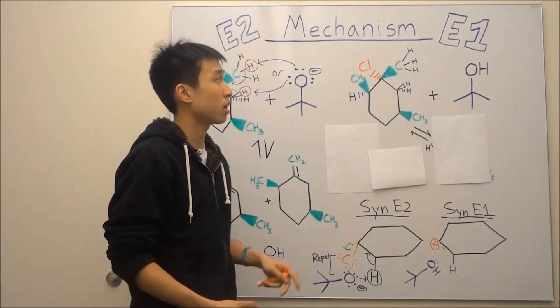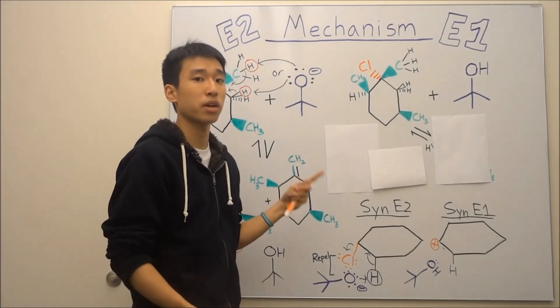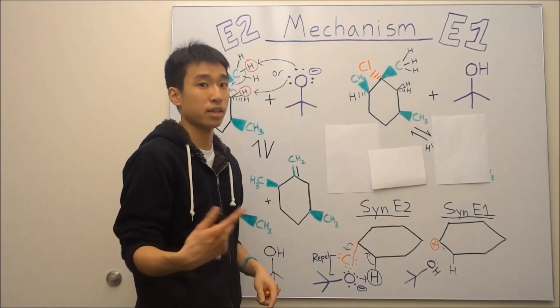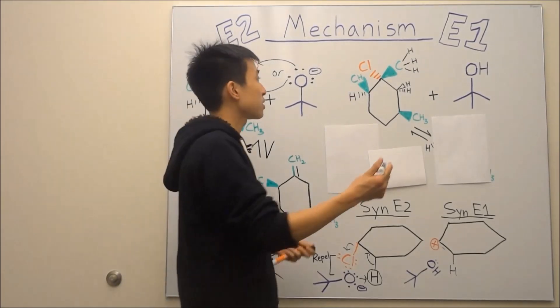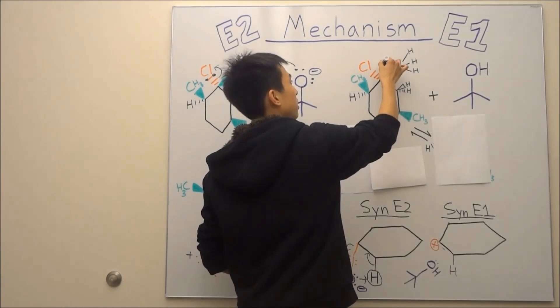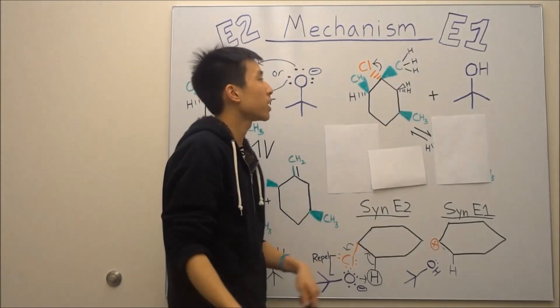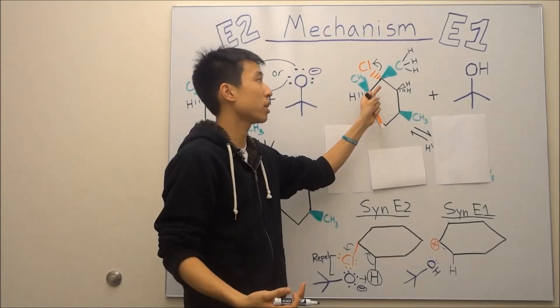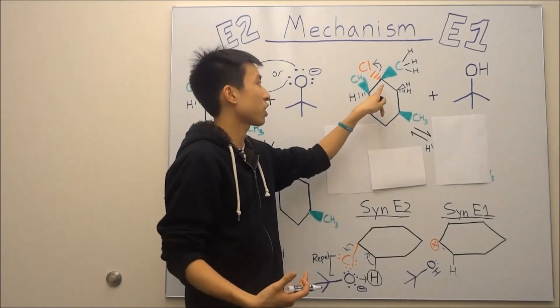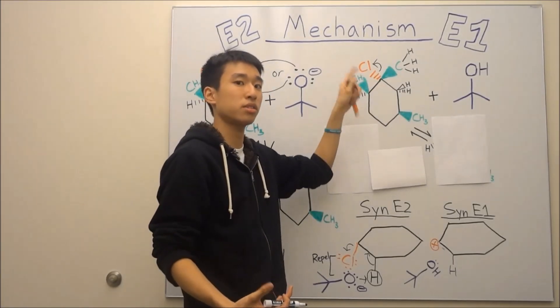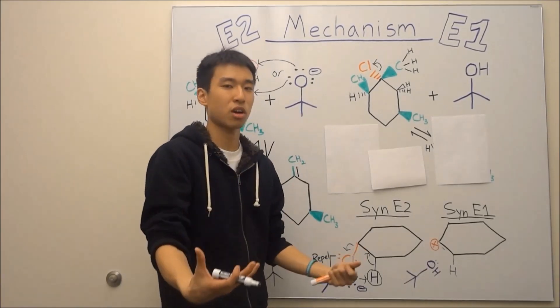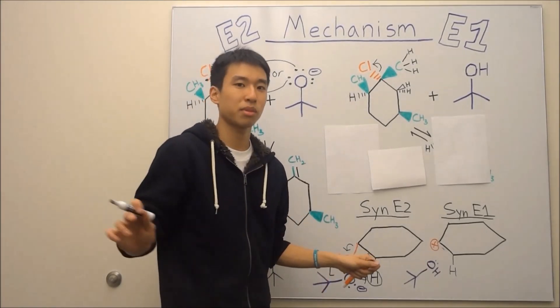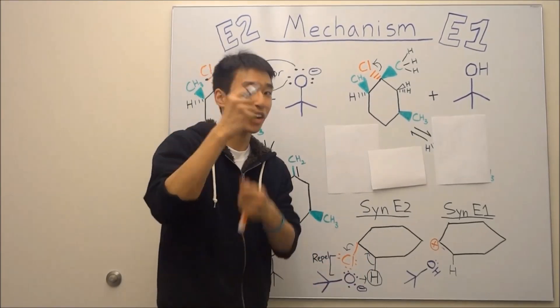So the first step here for E1 is the same first step as SN1. Think back. What was the first step for that? It was the slow step with the chlorine just leaving. It's slow because it's not the best thing to do because you're going to create—well, what's going to happen to your carbon? Chlorine's taking the electrons, so you're going to form a carbocation. Carbocations, also known as carbon with a positive charge, not stable. You don't want your beaker, once again, shattering in your face.